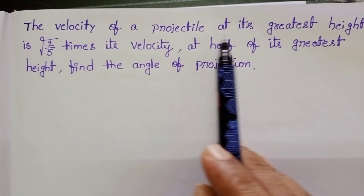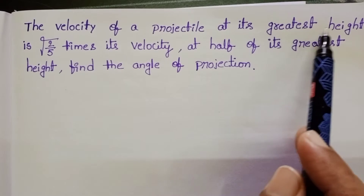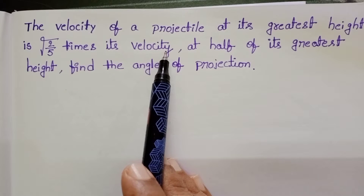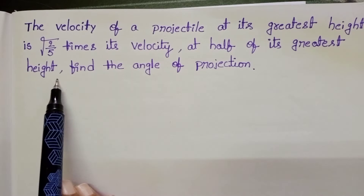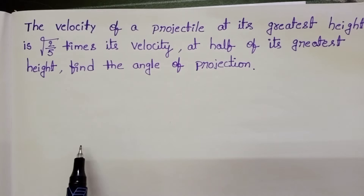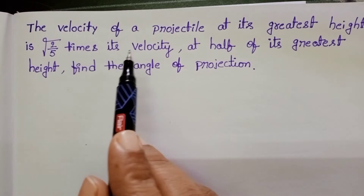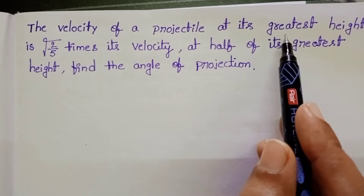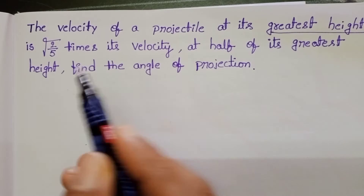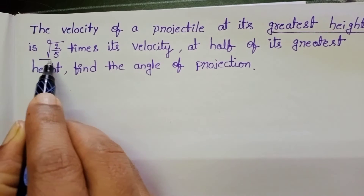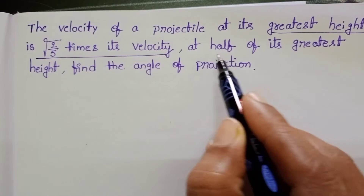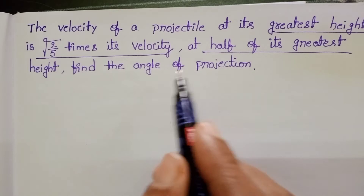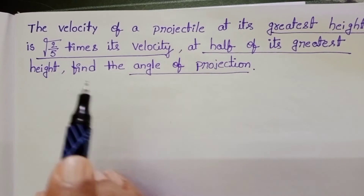The velocity of a projectile at its greatest height is root of 2 by 5 times its velocity at half of its greatest height. Find the angle of projection.